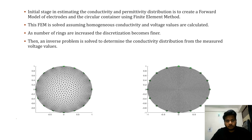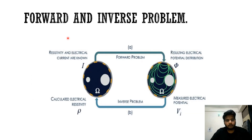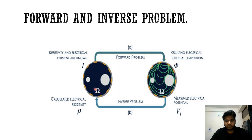Then an inverse problem is solved to determine the conductivity distribution from the measured voltage values. The two primary components of the EIT problem are the forward and inverse problem. The forward problem involves passing current, assuming a conductivity, and measuring the resulting voltages. The inverse problem takes those measured voltages and uses them to calculate the electrical resistivity of the object under study. These two problems must be solved to finally obtain the conductivity distribution inside the object.